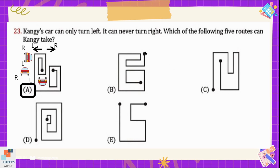Compared to the other options: in option B, at one corner the car takes a right turn, so B is not correct. In option C, the car moves to the right side, so C is not right. In option D, after moving straight the car takes a right turn. In option E, though the first three turns are left, at one point the car turns right. So option A is the only correct option.